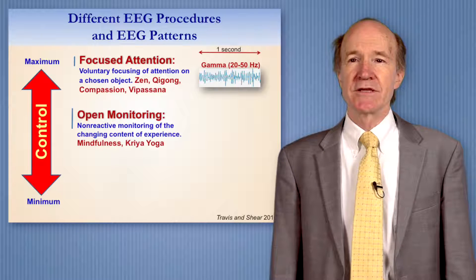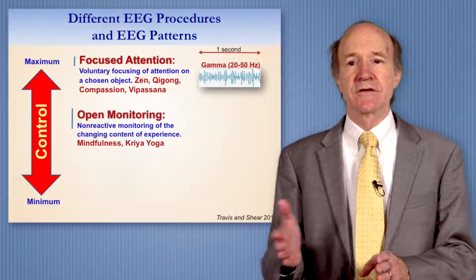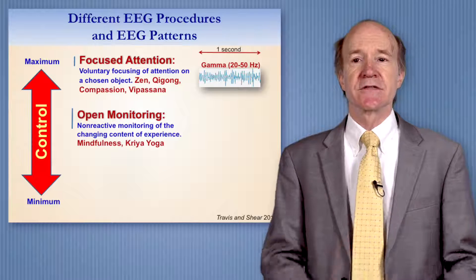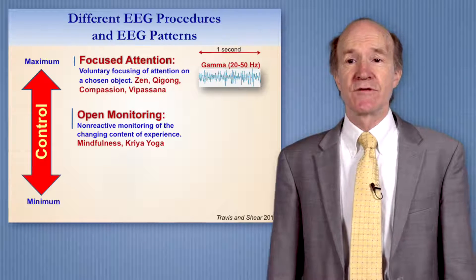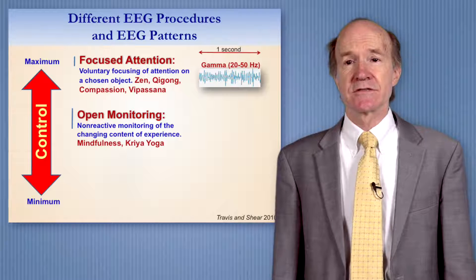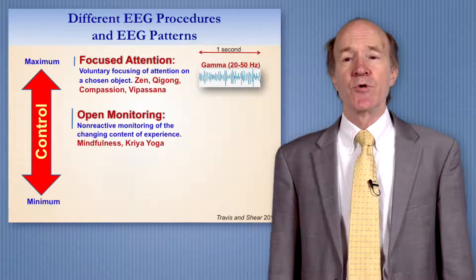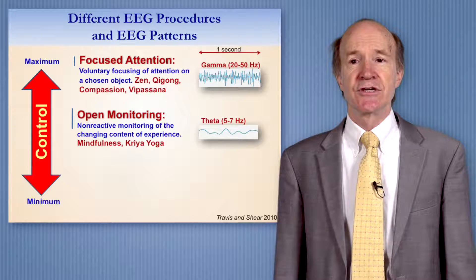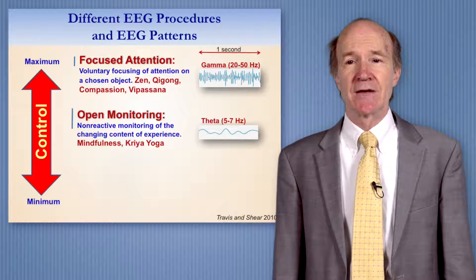Open monitoring meditations allow all experiences to pass through awareness, with your attention just moving from one experience to the next. For instance, mindfulness — you could be mindful of thoughts, emotions, breath. Whenever your attention is on internal mental processing, you see theta EEG; it goes up and down five to seven times per second.